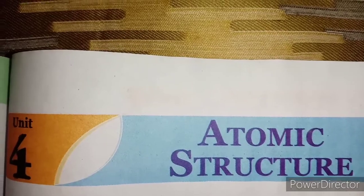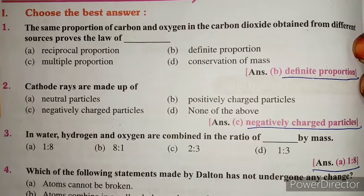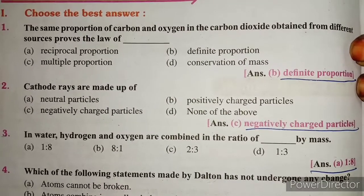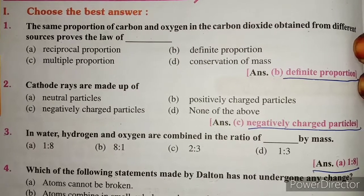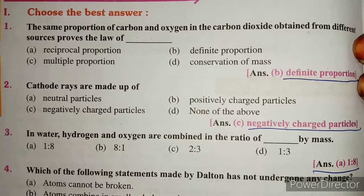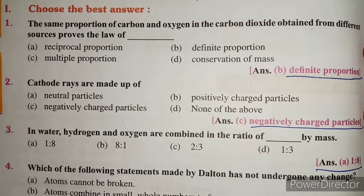Choose the best answer. Question 1: The same proportion of carbon and oxygen in the carbon dioxide obtained from different sources proves the law of definite proportion.